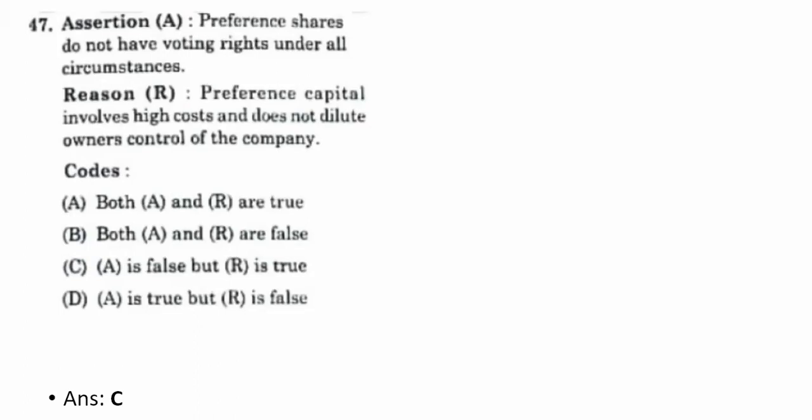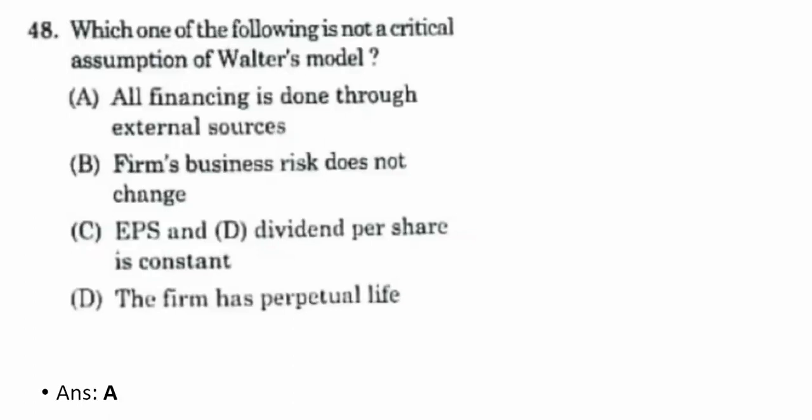Forty-seventh question — assertion and reasoning: preference shares do not have voting rights under all circumstances. The reason is preference capital involves high cost and does not dilute the owner's control of the company. The correct option is C — A is false but R is true. Forty-eighth question: which is not a critical assumption of Walter's model? The correct option is A — all financing is done through external sources.